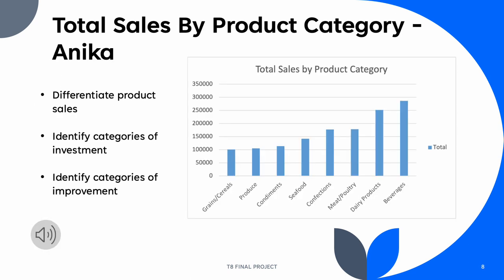This graph provides information on how much each product type generates in sales. Our company makes the most profit from providing beverages and dairy products, while grains, cereals, and produce provide the least amount of profit. This allows us to consider which types of products are worth more investment. Further investment in beverage and dairy industries could include providing more variety of products, such as different options from different places, or expanding those product sections within the store.